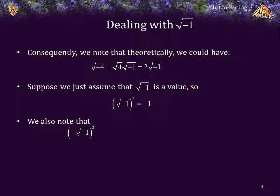We also note, therefore, that if we square negative the square root of negative 1, that gives us negative 1 squared times the square root of negative 1 all squared. Negative 1 squared is equal to 1, and the square root of negative 1 squared is negative 1. So this is 1 times negative 1, which is just negative 1. So if the square root of negative 1 squared is equal to negative 1, so is negative the square root of negative 1.